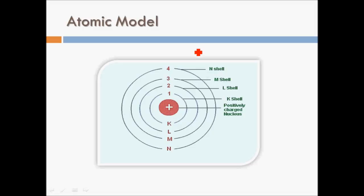Bohr also named the orbits as 1, 2, 3, 4 or K, L, M, N, starting from the innermost orbit. Now let's look at the postulates of Bohr's atomic model.